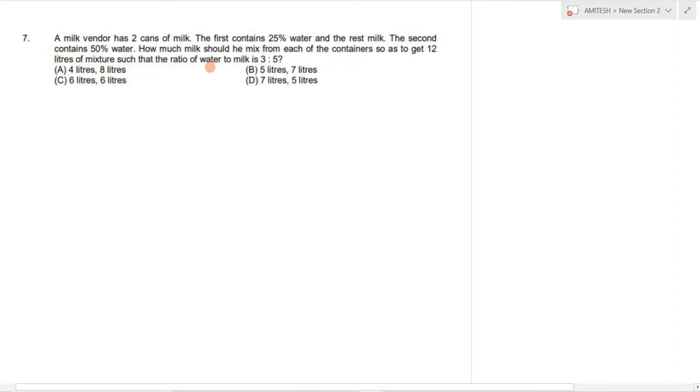First container, second container, and mixed container. In mixed container, water and milk ratio is 3 is to 5. So if water is 3 units then milk is 5 units. It means water percentage is 3 by 8.